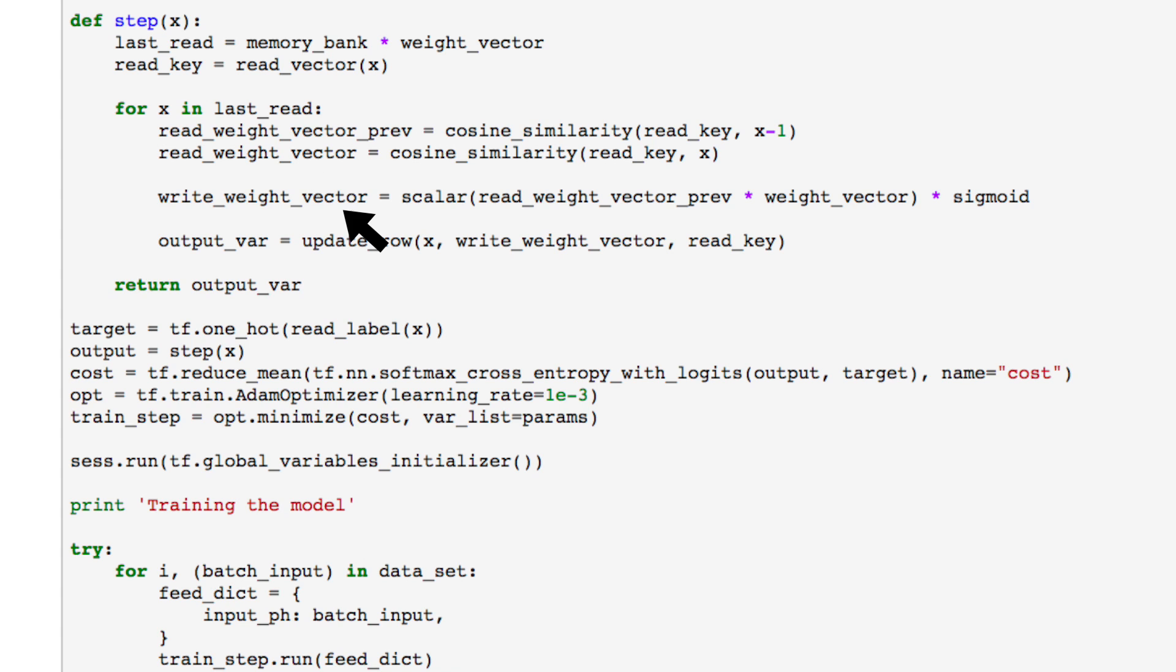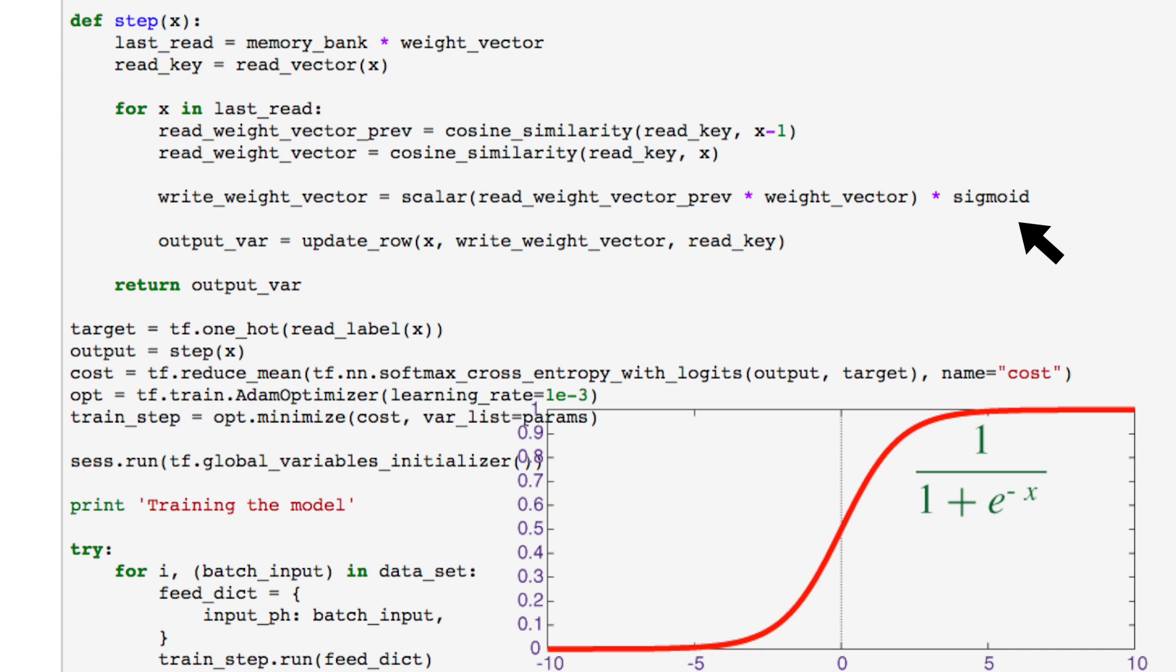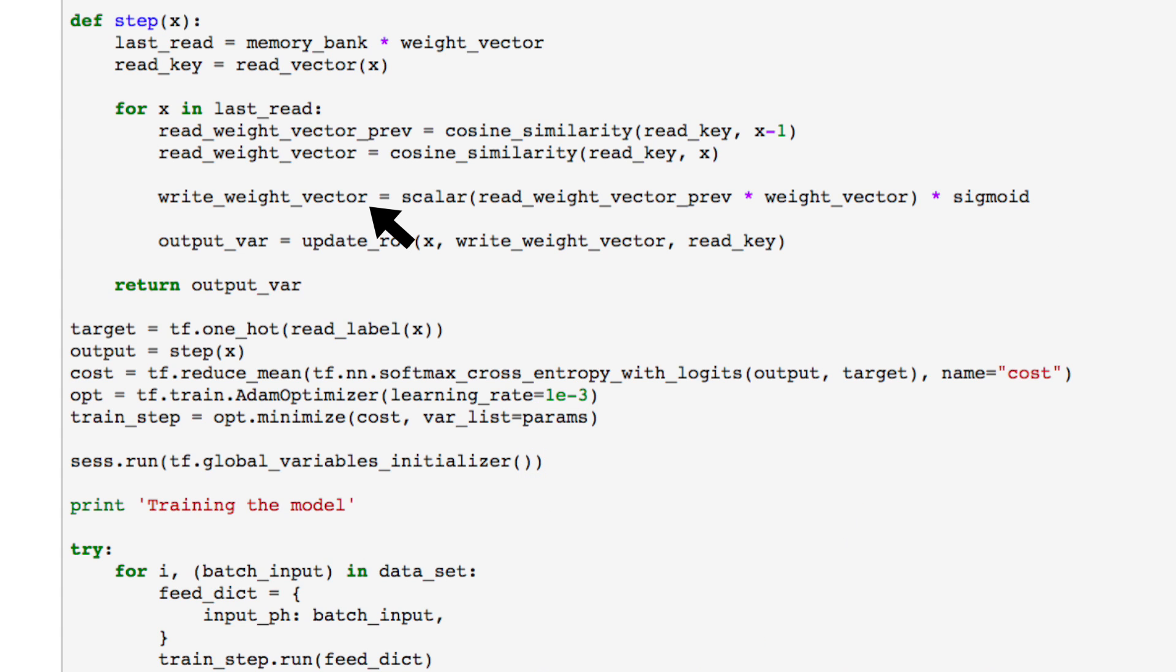To write to memory, the controller interpolates between writing to the most recently read memory rows and writing to the least used memory rows. Using the read weight vector at a previous time step and the weight vector that captures the least used memory location, the controller combines the two using a scalar parameter and the sigmoid function to create a write weight vector. Each row in memory is then updated using the write weight vector and the key issued by the controller.